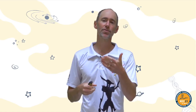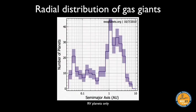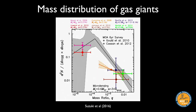Now let's move on to giant exoplanets. Here are some constraints: the radial distribution of gas giants shows a few hot Jupiters close to the star and many more distant Jupiters past about 1 AU. Jupiter is near the outer edge of this distribution, but beyond 1 AU is where most giant exoplanets are found.